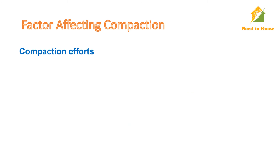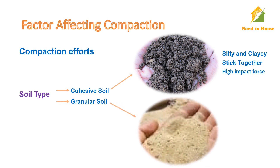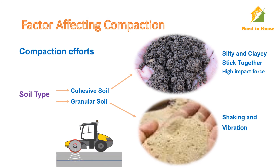Compaction effort depends on soil type. For any specific soil, if the required compaction machine is not used, we cannot get good compaction. Soil may be cohesive or granular. Cohesive soils are mostly composed of clay and silt; their particles stick together, so a machine with a high impact force is required. Granular soil, also called cohesionless soil, is a free-running type of soil with no silt and clay, so particles do not stick together. Granular soil particles require a shaking or vibratory action to move them, and their strength depends on friction between particles.